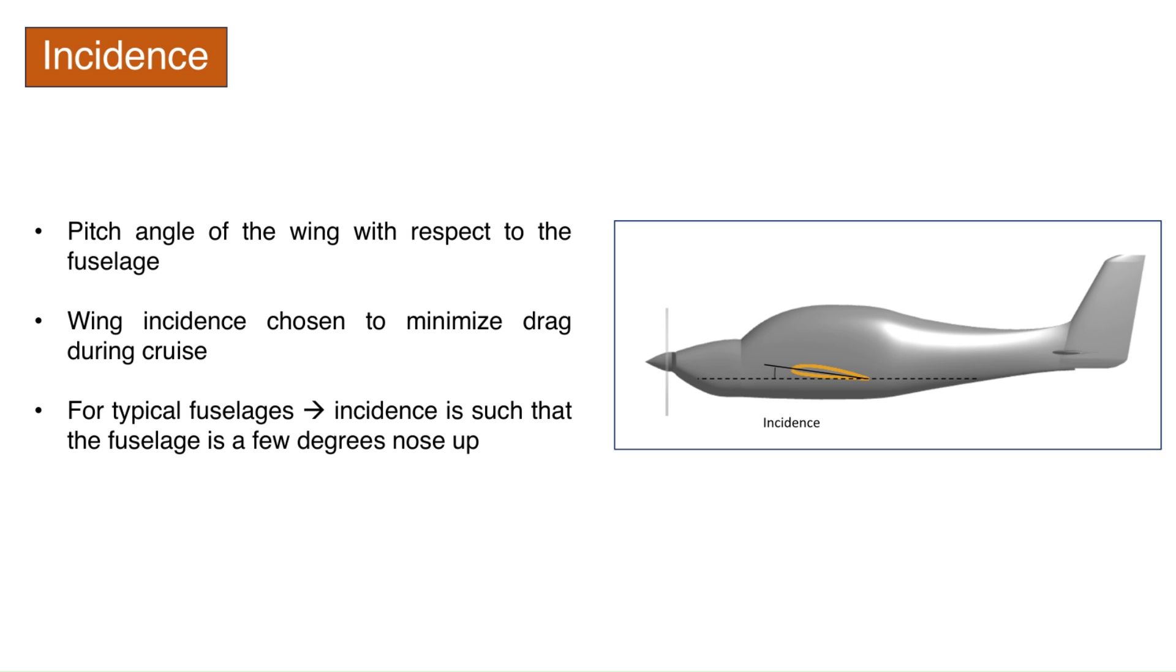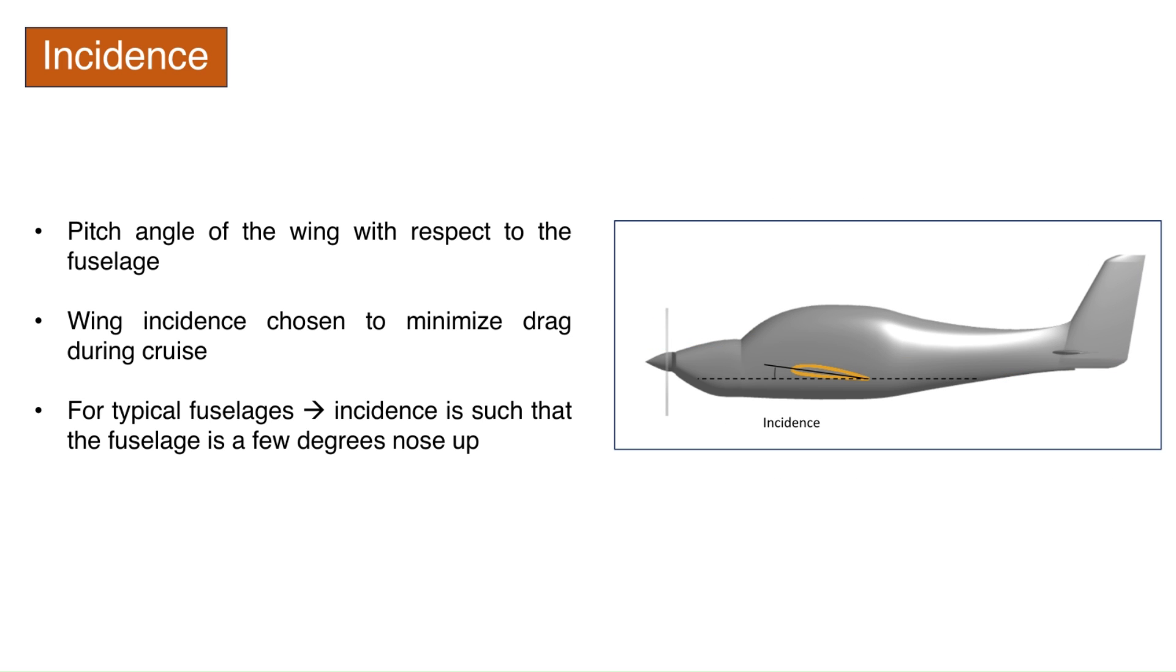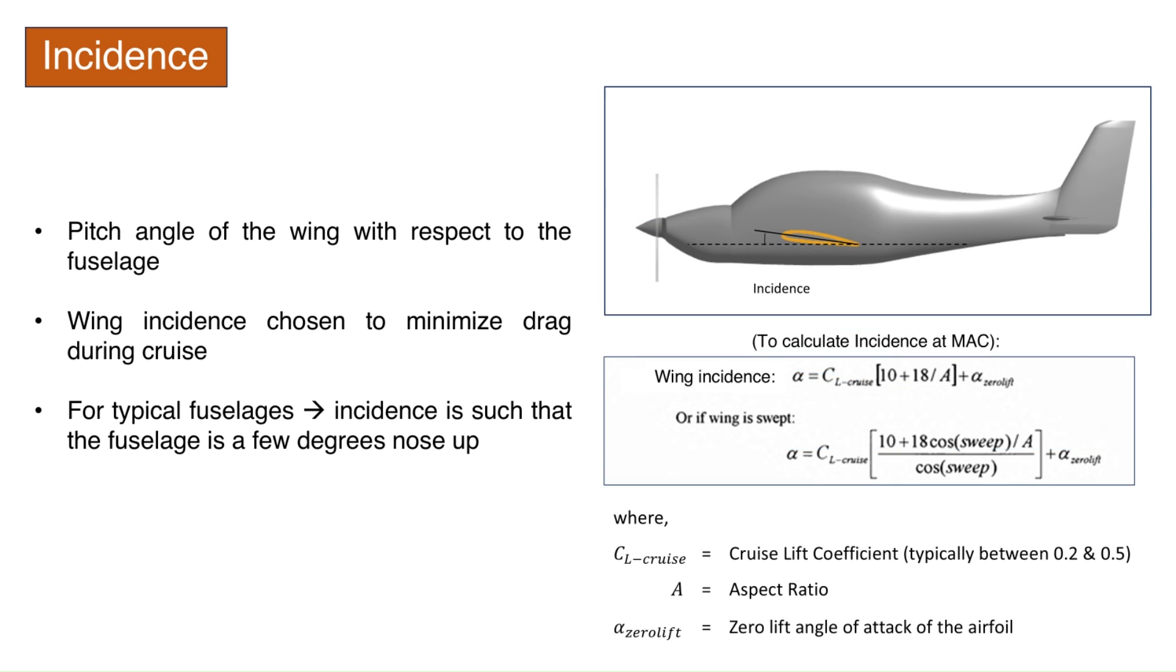Wing incidence. It is the pitch angle of the wing with respect to the fuselage. If the wing is untwisted, the incidence angle is between the fuselage axis and the airfoil's chord lines. If the wing is twisted, then wing incidence is usually measured with respect to the MAC or the root of the exposed wing. Aircraft drawings or design data frequently provide the values for the incidence of the root and tip, which defines the twist. Wing incidence is chosen to minimize drag during cruise. This is done such that when the wing is at the correct angle of attack for the desired lift, the fuselage is at an angle of attack for minimum drag. For typical fuselages, this angle is often a few degrees nose up as the fuselage also contributes to lift.